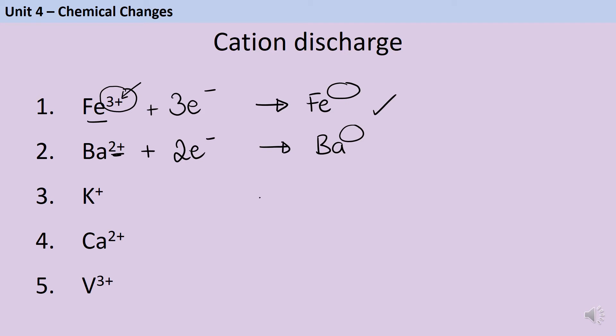So at the end of my potassium equation, I'm going to be left with potassium atoms. And therefore, this one positive charge needs balancing out with a single negative electron. Calcium has a two plus charge on its ion, so it will need two electrons to balance it out to make a calcium atom. And then vanadium, with a three plus charge, is going to need three electrons to make a vanadium atom.